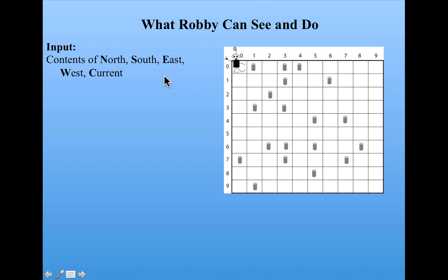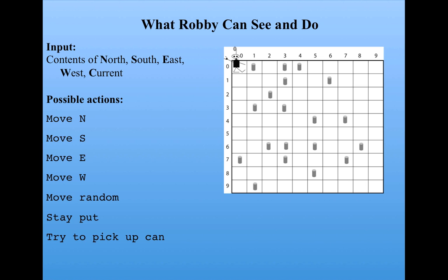He uses what he can see to decide which action to take at each time step. He has seven possible actions: he can move to the north, move to the south, move to the east, or move to the west — each moving one square. He can make a random move, choosing a random direction. He can stay where he is and do nothing. Or he can try to pick up a can.